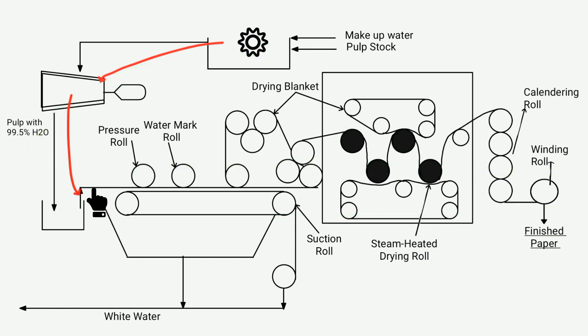As the wet web enters the paper making machine, it is pressed using pressure rolls to remove water, allowing fibers to bond well, and then, the wet paper sheet is formed, containing 60-65% water.